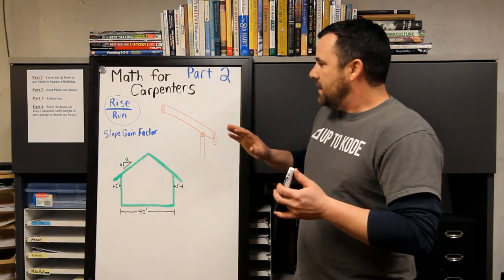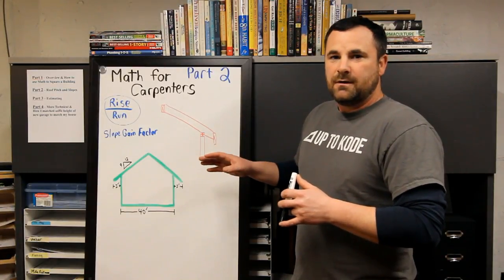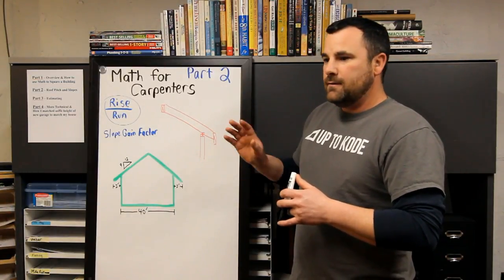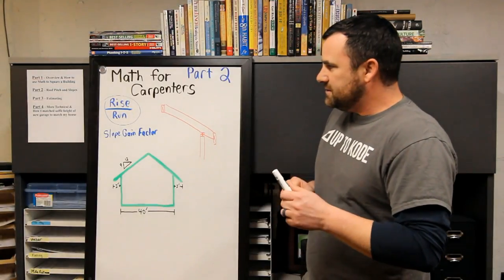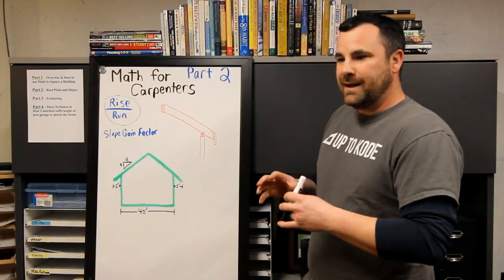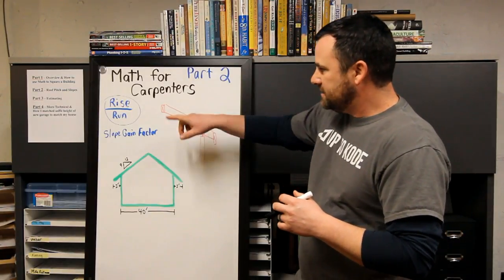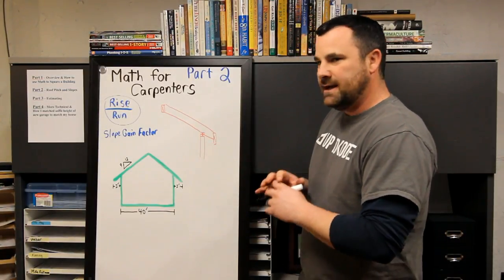I want to keep this simple and quick. If you need more answers or have questions, feel free to ask me. Stay tuned for part three where I get a little deeper into the slope gain factor, rise over run, and estimating shingle area, gable end area, soffit, fascia, all that stuff.